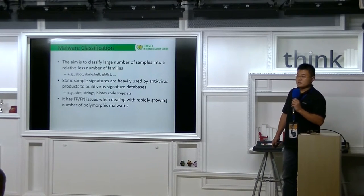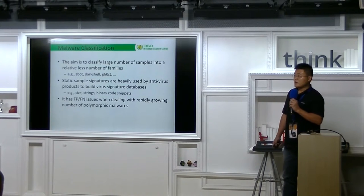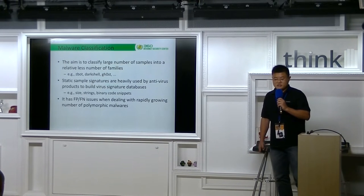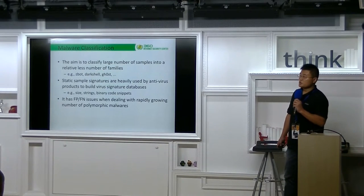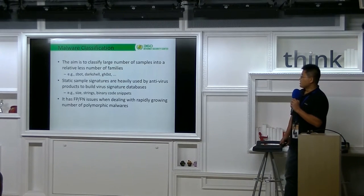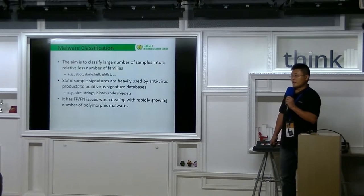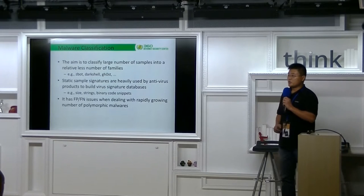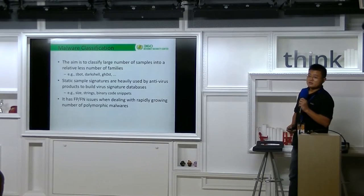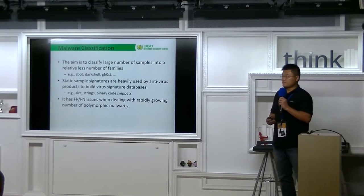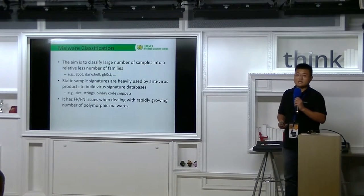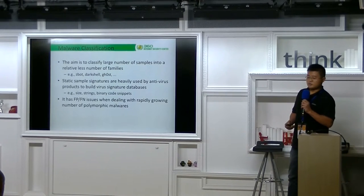Malware classification is a technology that classifies a large number of samples into a relative number of families, thus simplifying the malware analysis and detection problem. The current classification is mainly based on static sample signatures, such as the size, strength, or binary code snippets. It has false positive and false negative issues when dealing with modern polymorphic malwares, because the signature database update speed may not catch up with the malware growing speed.